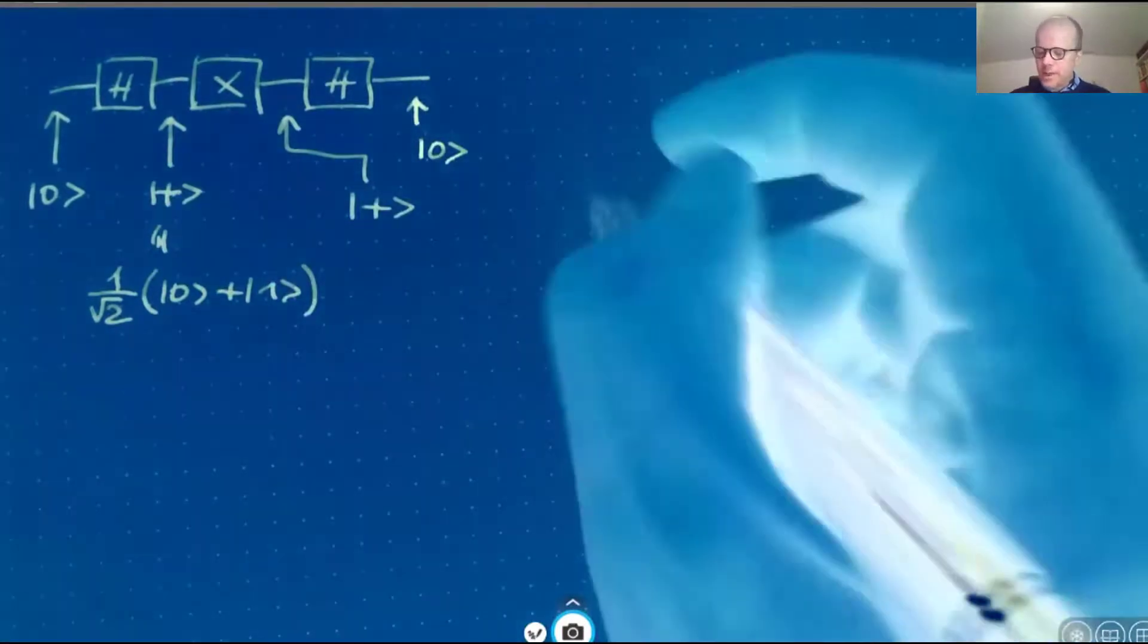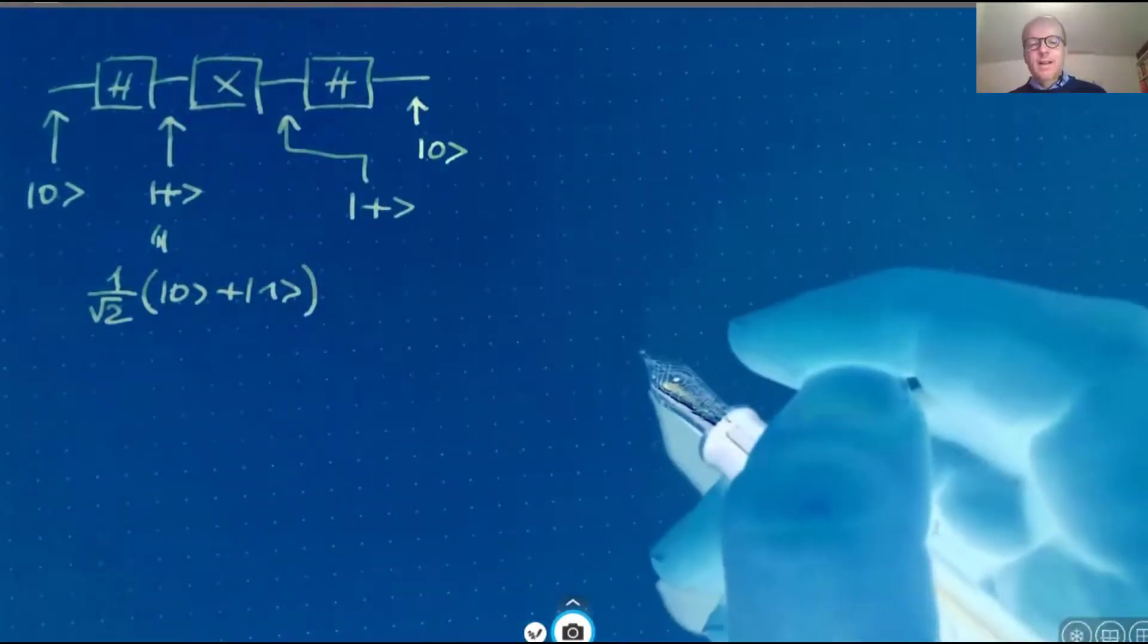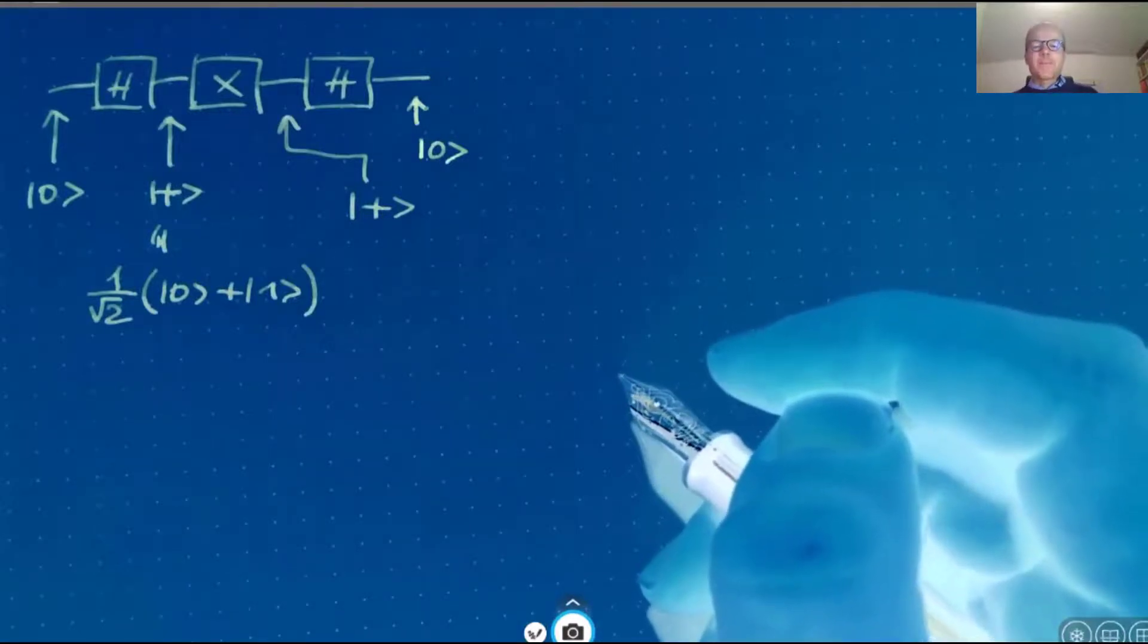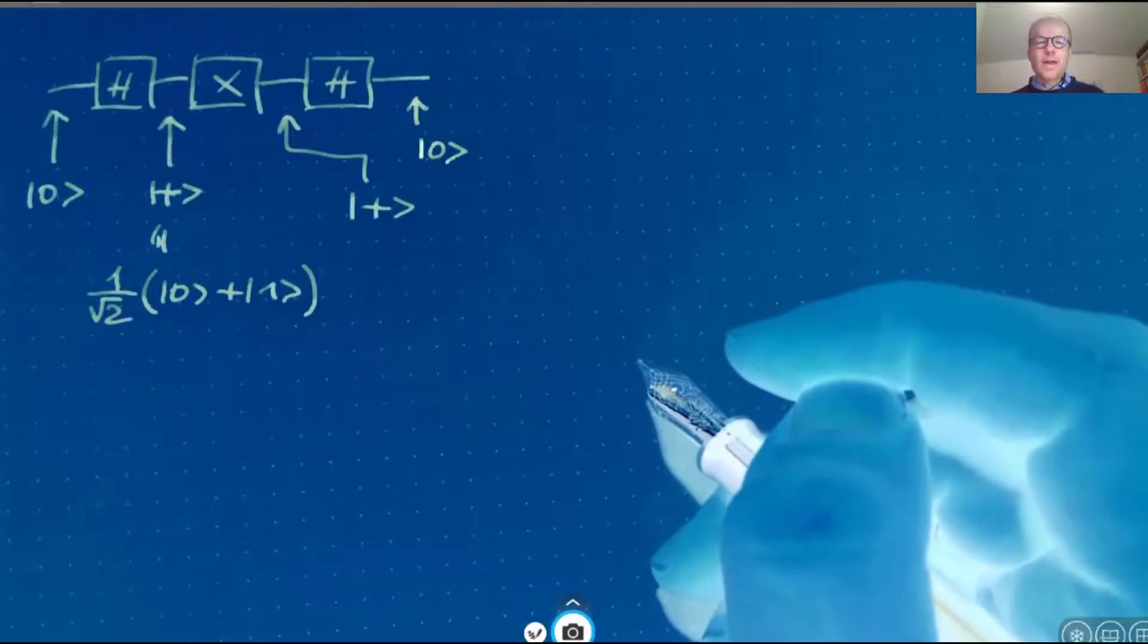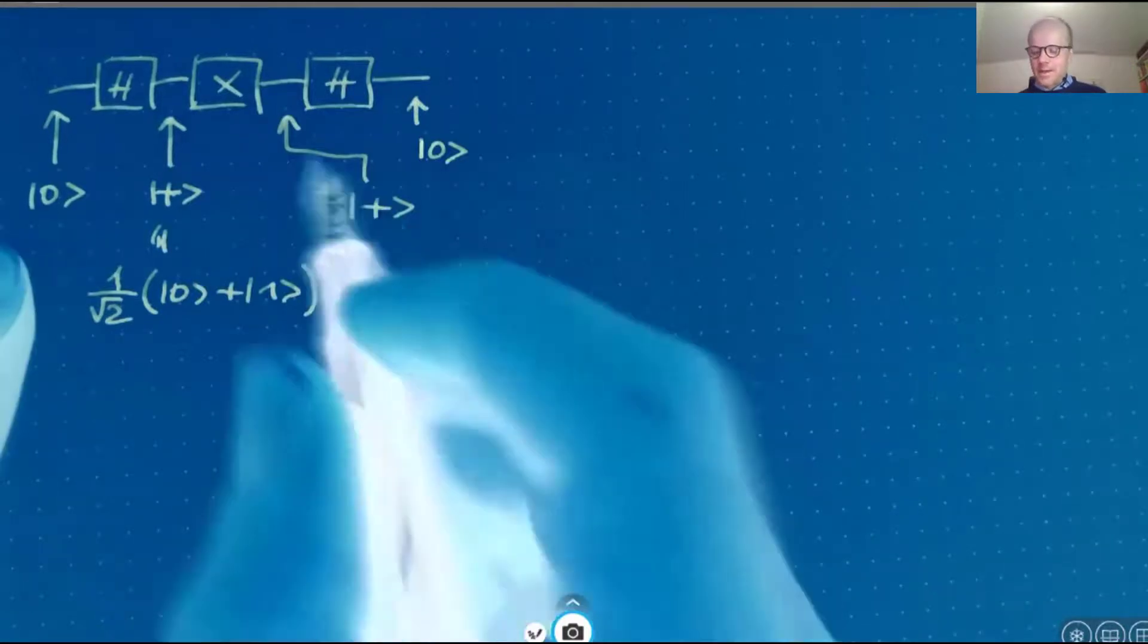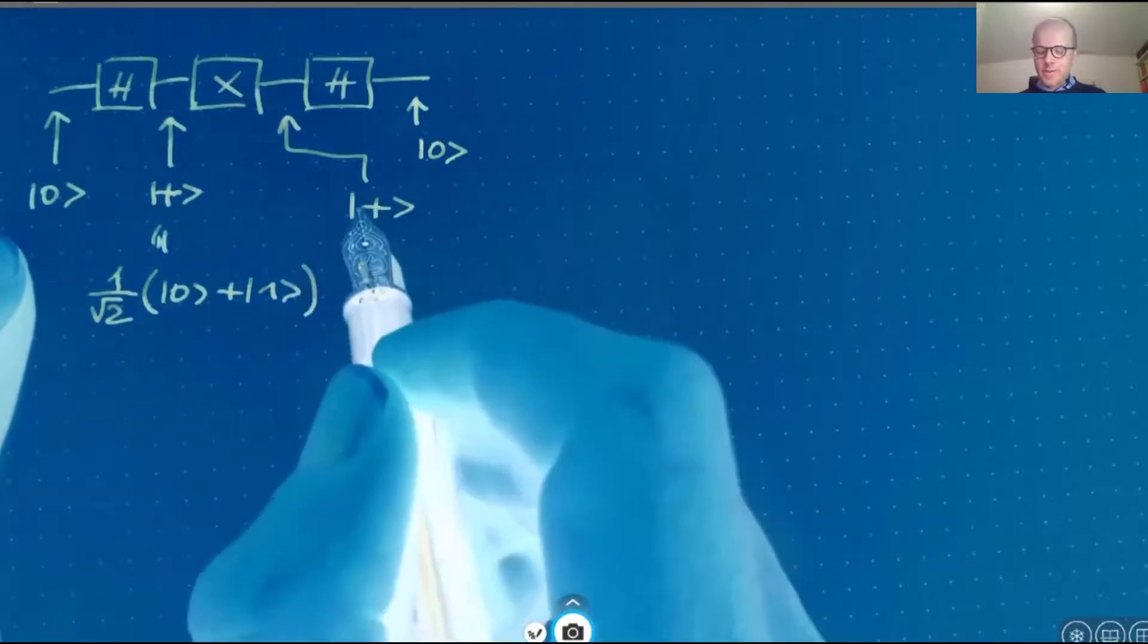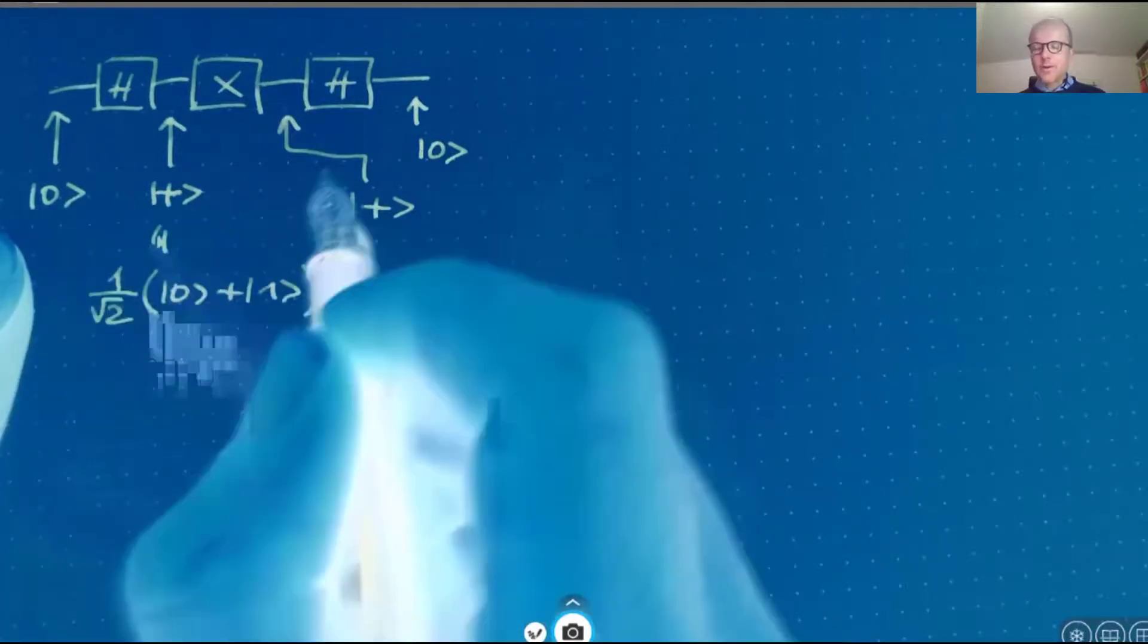And then the final Hadamard gate transforms the plus state back to the basis state zero. Why is that? We can quickly check that. It follows from the fact that Hadamard squared is the unit operator. So the Hadamard operator is its own inverse. So the second Hadamard simply reverses the transformation from zero to plus. Then it goes back to zero.